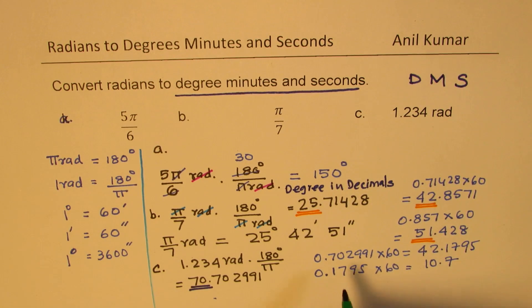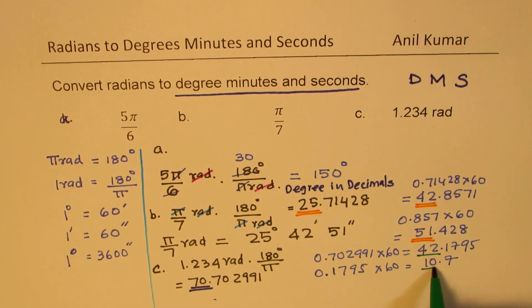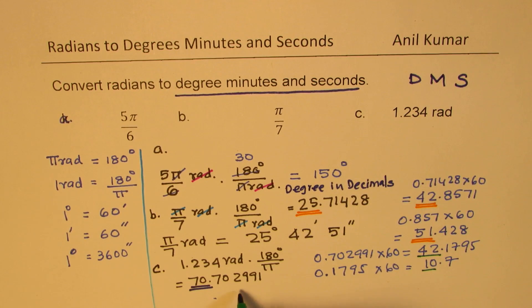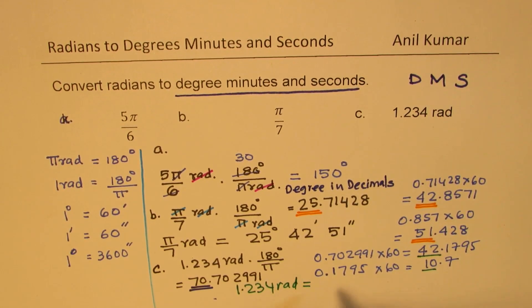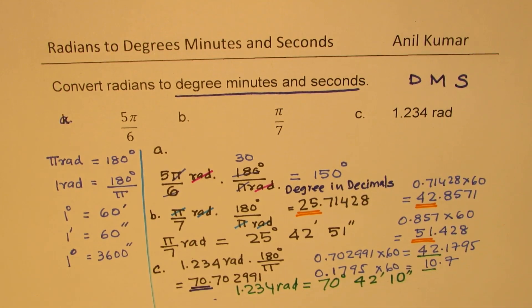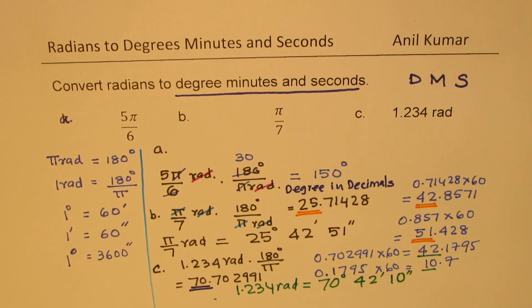So the final answer is: 1.234 radians equals 70 degrees, 42 minutes, and 10 seconds. That is how you do this conversion. I hope these steps are absolutely clear — feel free to write your comments, share your views, and if you like and subscribe to my videos, that'd be great. Thanks for your time and all the best.